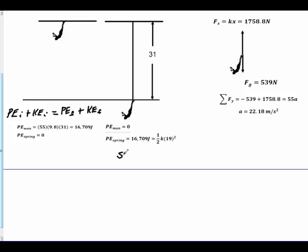Now what you want to do is solve for k. It's your only unknown. When you do that, you will get k is equal to 92.57 newtons per meter.